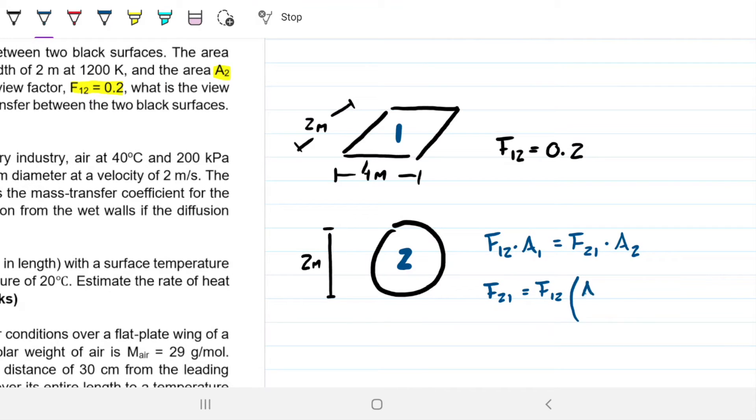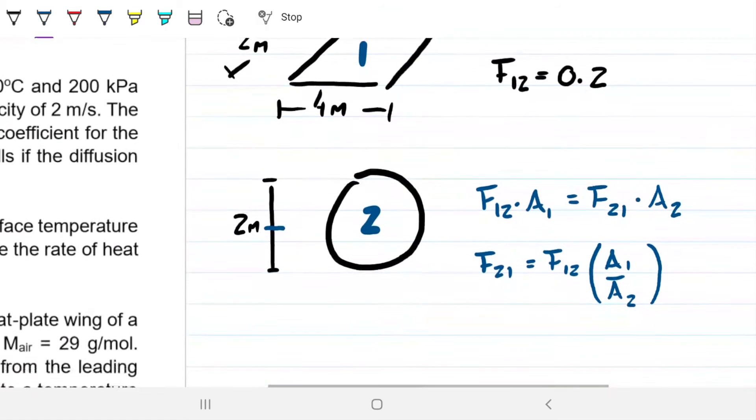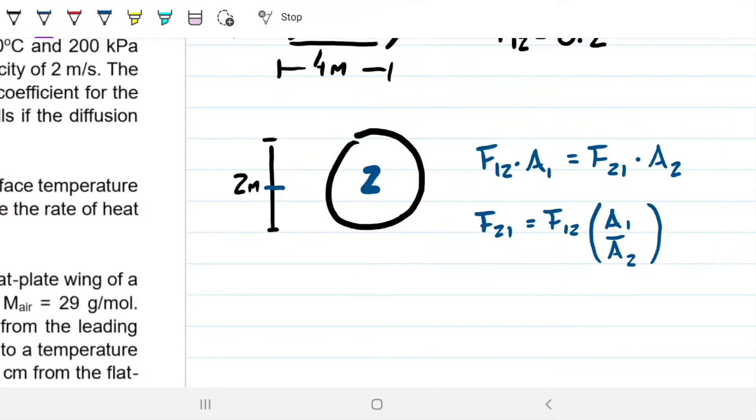And then we have two simple geometries here. So if you want to know what is F21, then all I need to do is F12 and then the ratios between the two areas. Obviously, the area on this one here is just a multiplication of 2 and 4, right? And over here, if I want this area, I just need to do pi r squared. Only thing is we have the diameter, that's not radius, so we need to divide by 2.